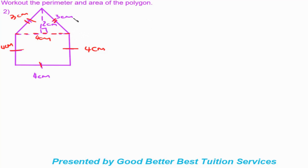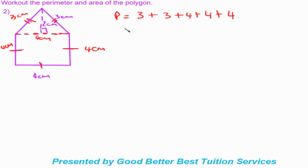We'll work out the perimeter first. Remember the perimeter is the length around the outside of the object — not the inside. A common mistake is to include the internal four-centimeter dashed line, but that is not part of the perimeter; perimeter is only the exterior. So perimeter equals three plus three plus four plus four plus four. That gives us six plus twelve, which equals eighteen centimeters. Perimeter units are not squared.